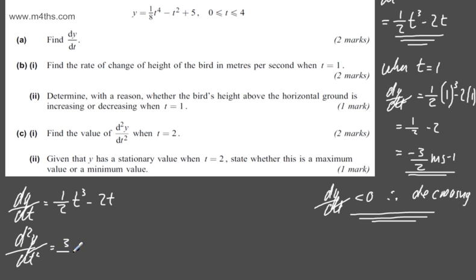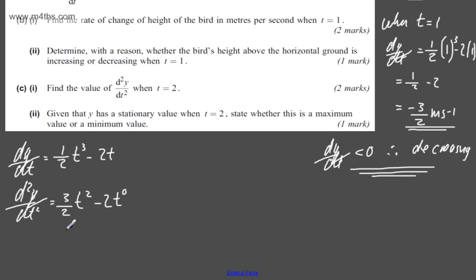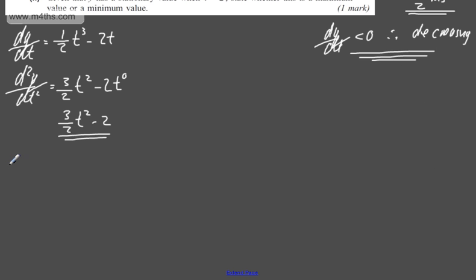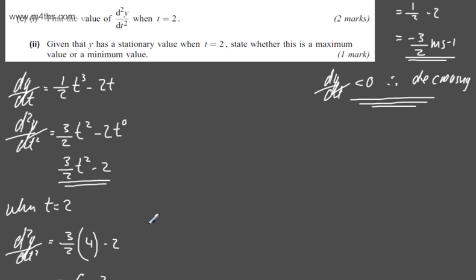Multiplying down by the power and dropping the power by 1, multiplying down by the power and dropping the power by 1. So if I just tidy this up, we'll have 3 over 2 t squared minus 2. At this stage, I'm going to substitute in now t equals 2. So when t equals 2, d²y by dt² will be equal to 3 over 2, 2 squared which is going to give me 4 minus 2. So this is going to give me 6 minus 2 which is equal to 4. So that's the first part of c done for two marks.